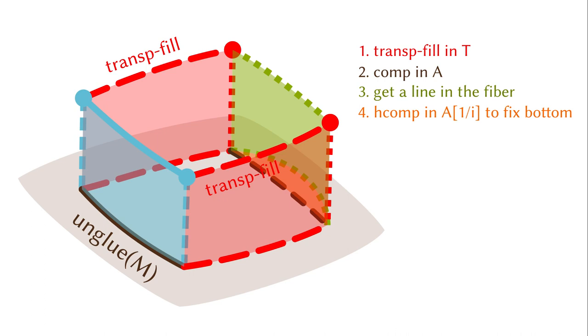We need to do another homogeneous composition to fix the bottom line. Hmm, if you are looking into the diagram carefully, you might wonder why we cannot just use the image of the green line directly. In what way a homogeneous composition can help us?